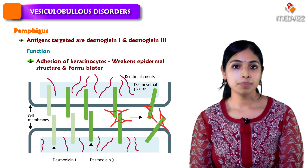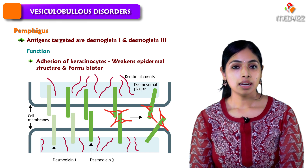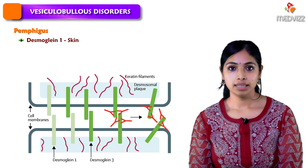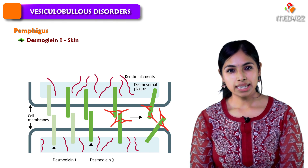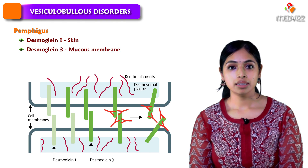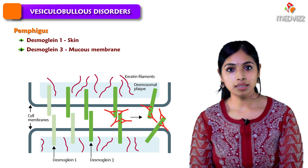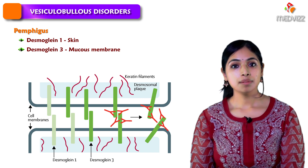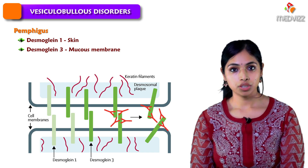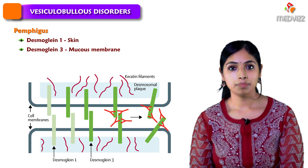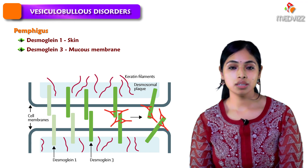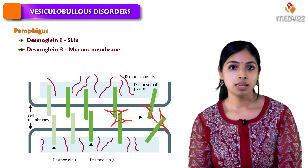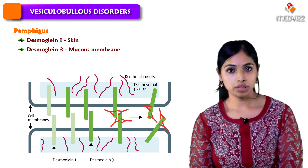In skin as well as mucosa, the predominant Desmogleins are Desmoglein 1 and Desmoglein 3. Desmoglein 1 is mainly present in the skin and to a lesser extent Desmoglein 3, while in the mucous membrane, Desmoglein 3 is predominantly present and Desmoglein 1 is present in smaller quantities. This is important when we look at the clinical presentation in Pemphigus group of disorders.